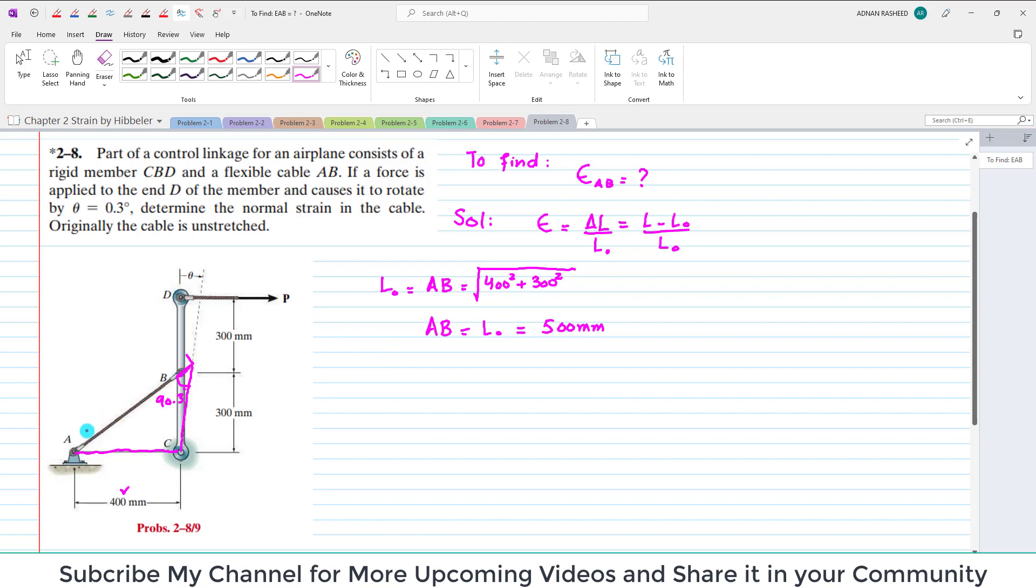Now this length from here to here, this length is the new length, which is AB dash. So new length L is equal to AB dash, and that is equal to using the cosine rule: 400 squared plus 300 squared minus 2 times 400 times 300 times the cosine of the angle.